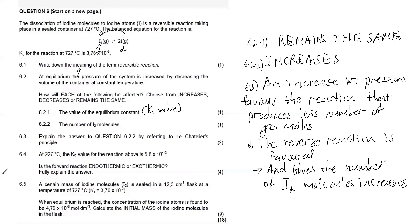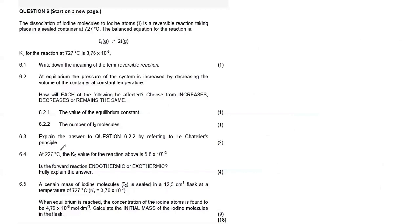Question 6.4: at 227°C the Kc for the reaction is 5.6 × 10⁻¹². Comparing the two values, 10⁻³ is greater than 10⁻¹² — the more negative the exponent, the smaller the number. So Kc decreased when the temperature was lowered from 727°C to 227°C. The question asks: is the forward reaction endothermic or exothermic? We are not given the enthalpy change, so we must reason from the observations.